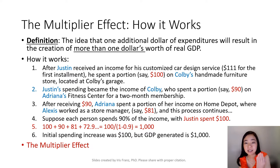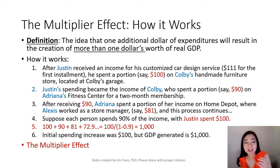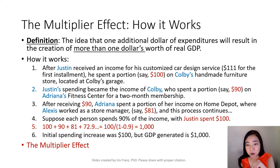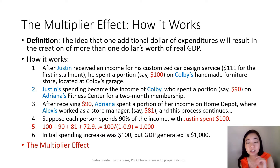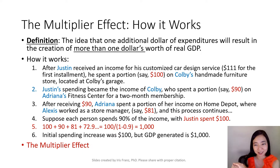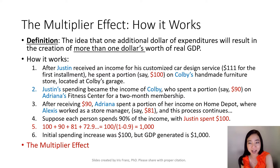So you can see that initially Justin spent $100. But then the spending continues. So our total GDP generated was $100, plus $90, plus $81, and so on and so forth. So eventually, the GDP generated was $1,000 instead of just $100. So $100 was initial spending, but the GDP generated was $1,000. That is the idea of the multiplier effect.